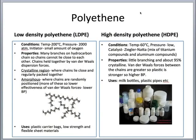Polyethene comes in two varieties: low-density polyethene (LDPE) and high-density polyethene (HDPE). For LDPE, the conditions are a temperature of about 200°C, a pressure of about 2000 atmospheres, and the initiator is a small amount of oxygen. For HDPE, the temperature is much lower at about 60°C, the pressure is also very low, and the catalyst used is Ziegler–Natta, which is a mixture of titanium compounds and aluminium compounds.